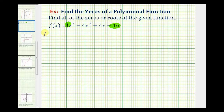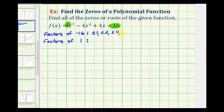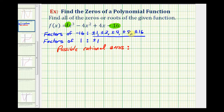So let's start by listing the factors of negative 16, and then we'll list the factors of one, and then we'll look at the ratios that we can form from these factors. The factors of negative 16 are the numbers that would divide evenly into negative 16: plus or minus one, plus or minus two, plus or minus four, plus or minus eight, and plus or minus 16. The factors of one are just plus or minus one. So if we look at all the possible ratios of the factors of negative 16 to the factors of positive one, the possible rational zeros would just be plus or minus one, plus or minus two, plus or minus four, plus or minus eight, and plus or minus 16.